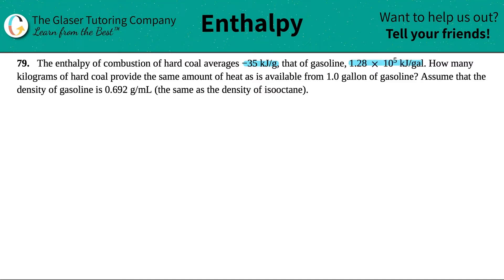How many kilograms of hard coal provide the same amount of heat as is available from 1.0 gallons of gasoline? Assume that the density of gasoline is 0.692 grams per mil and the same as the density of isooctane.